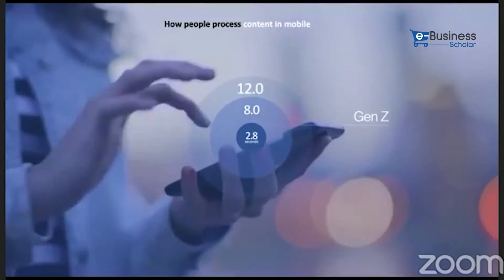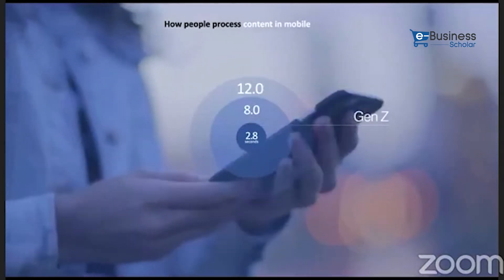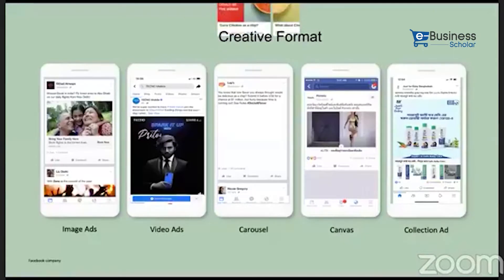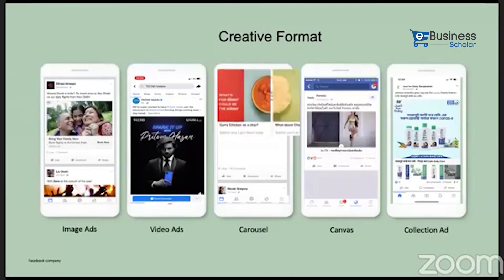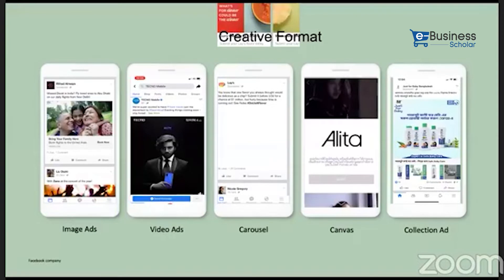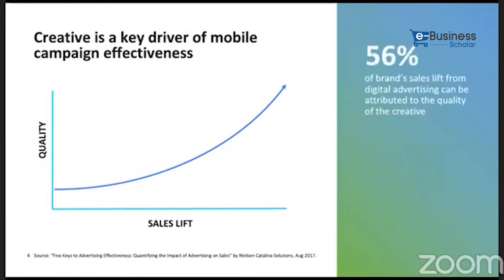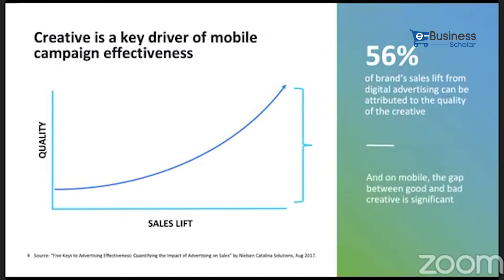You're probably asking yourself: how are we going to make thumb-stopping creative for advertising? That's the part I will discuss in this presentation. These are the ad formats we're exposed to every day: image ads, video ads, carousel, canvas, collection ads, messenger ads, and story ads. According to Nielsen research, creative is a key driver of mobile campaign effectiveness — 56% of brand sales lift from digital advertising can be attributed to the quality of the creative. Even the best media plan won't save a campaign with poor creative.